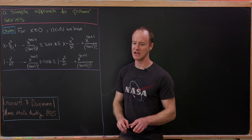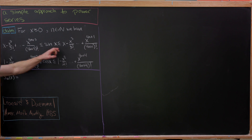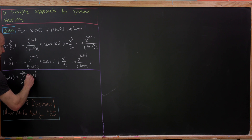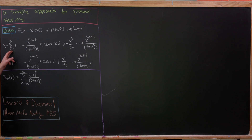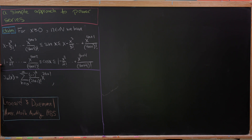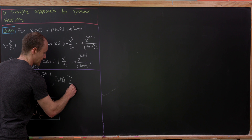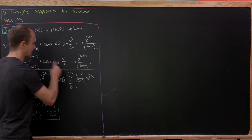This calls for some notation. Let S sub m of x equal the sum as k goes from zero to m of minus one to the k over (2k+1) factorial times x to the (2k+1) — alternating with odd factorials in the denominator. Similarly, let C sub m of x equal the sum as k goes from zero to m of minus one to the k over (2k) factorial times x to the (2k).